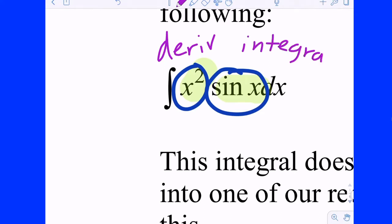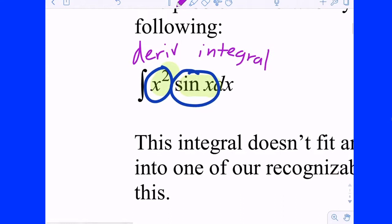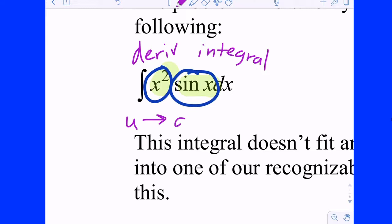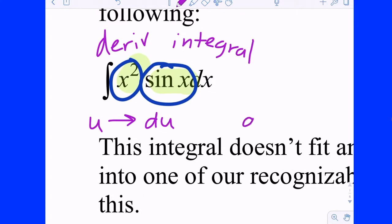In this case, you know how to find the derivative and the integral of both x squared and sine of x. So what we're going to do is assign one of them to the letter U. The one we call U, we're going to be taking the derivative of. The other one we're going to call DV, and we're going to find the antiderivative of it and call it V.